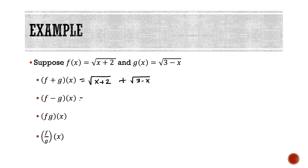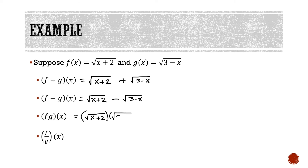Similarly for subtraction, we have the same issue — we write function f, put a subtraction sign, and write function g, but we can't simplify further. For the product, I am multiplying √(x + 2) times √(3 - x). In this case, you can combine the two terms under the same square root.